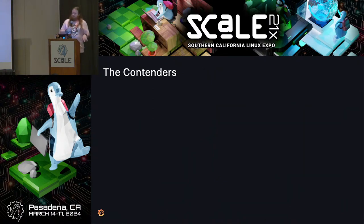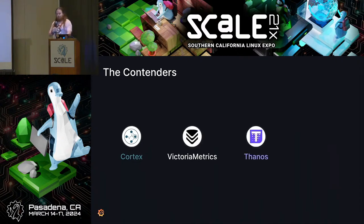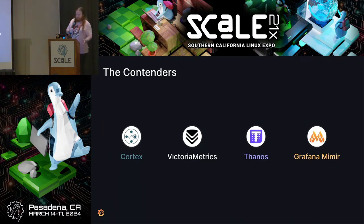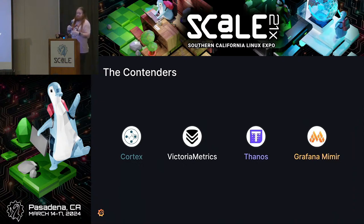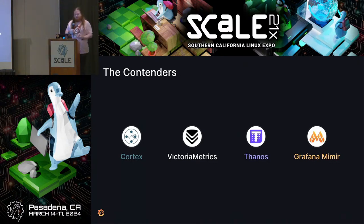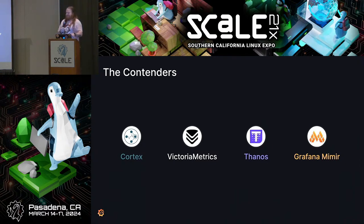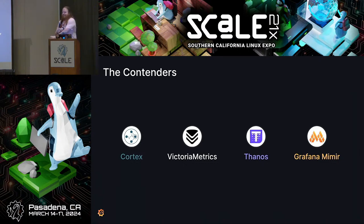The actual contenders I ended up with are four: Cortex, Victoria Metrics, Thanos, and Grafana Mimir. I'm trying to do this in a really unbiased way and I'm not going to recommend a particular one. They're all very valid choices. I'm going to let you know their factual status on several criteria that I think are important when you're considering a production rollout. All the information I pulled is from the public docs or GitHub of each project — so if I'm wrong, it was wrong up there.